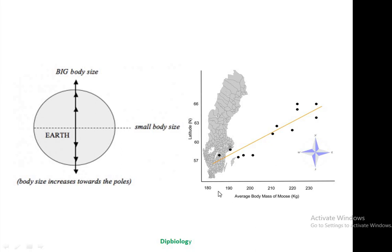In these graphs, we can easily understand, if we compare the longitudinal variations with average body mass of moose — moose is actually one kind of deer — we can see that those moose or deer living near to the equatorial zone have low body mass, while those races of moose or deer living towards the polar regions have increased body size. This is the generalization of Bergmann's Rule.